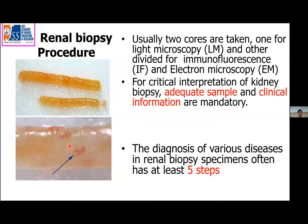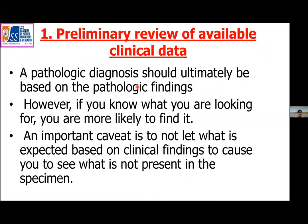With a hand lens, we can appreciate the cortical tissue, which is essential for assessment. The glomeruli appear as brown dots. For critical interpretation of kidney biopsy, adequate sample and clinical information are mandatory. The diagnosis involves at least five steps, beginning with a preliminary review of available clinical data. A pathologic diagnosis should be based on pathologic findings. However, if you know what you are looking for, you are more likely to find it. An important caveat: do not let expected clinical findings bias you to see what is not present in the specimen.